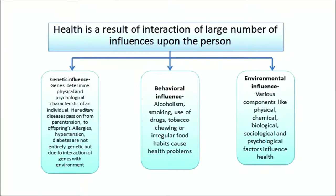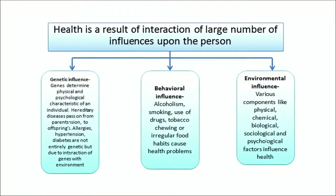What is genetic influence? Genetics determines the physical and physiological characteristics of an organism. We all know that hereditary diseases are passed on from parents to offspring. Diseases like allergies, hypertension, diabetes, etc. are not entirely genetic. However, they are due to the interaction of genes with the environment. These are triggered and affected by nutrition, stress, emotion, hormones, drugs and other environmental interactions.